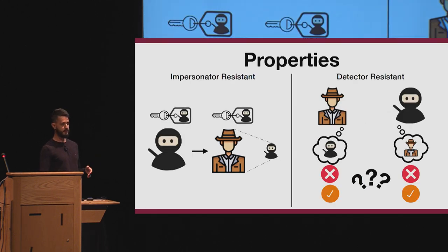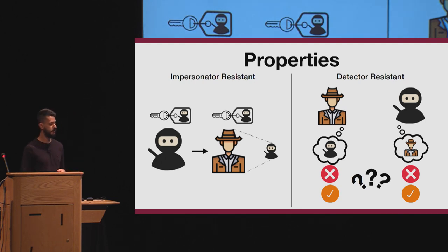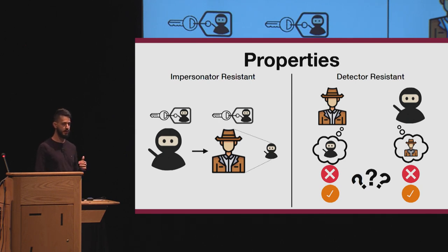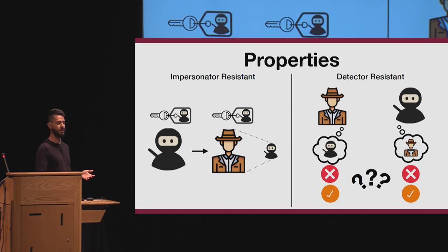You can have some properties. The intuitive one is impersonator resistance: it's impossible to impersonate another person, so if I have a ninja and I have the attributes for ninja, I cannot pretend to be a detective because I need the corresponding key for those attributes. The second one is called detector resistance, which is a privacy guarantee: suppose the protocol fails because at least one of the two policies has not been satisfied — then it's impossible to determine which one. This gives privacy guarantees, because if I choose the policy 'ninja', I cannot say whether the other party is a ninja or not, because I don't know if my policy is satisfied.